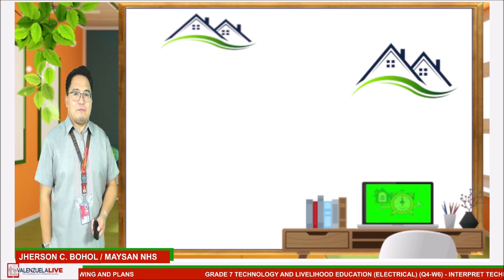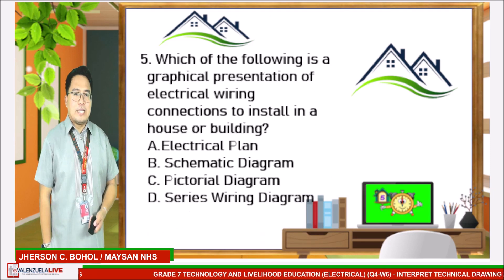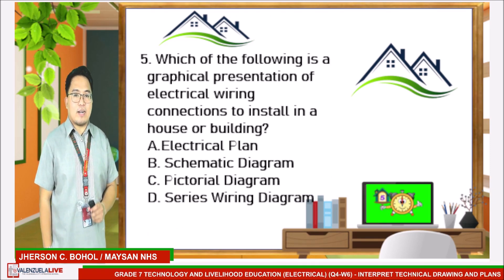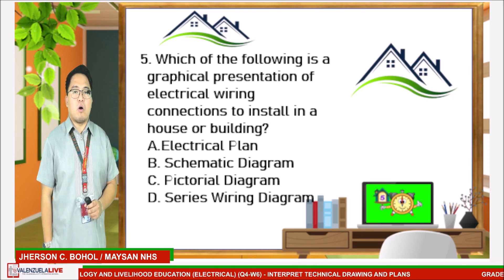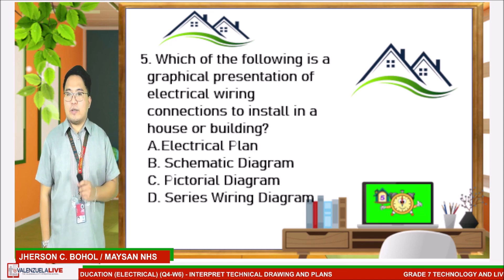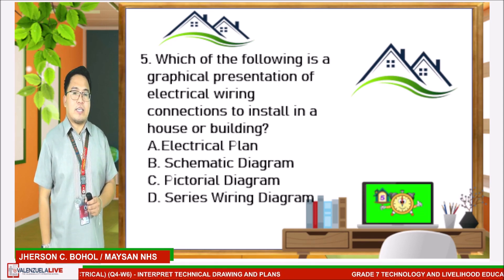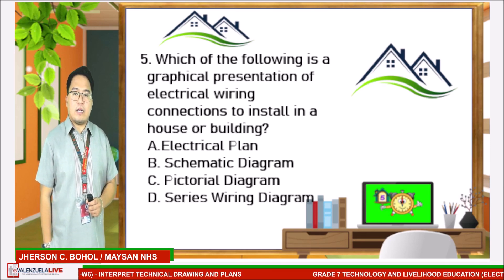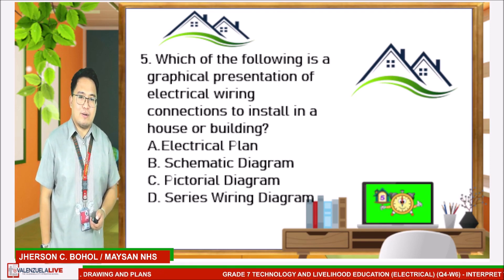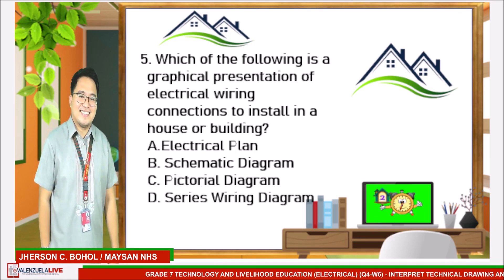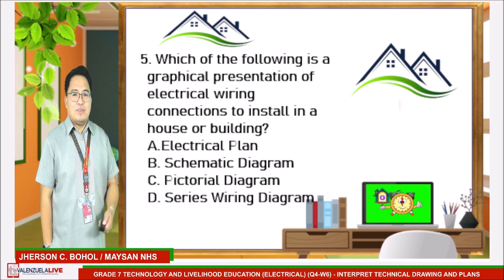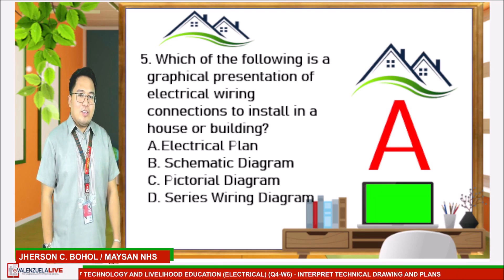Number five: which of the following is a graphical presentation of electrical wiring connections to install in a house or building? Choices are: letter A, electrical plan; letter B, pictorial diagram; letter C, schematic diagram; and letter D, series wiring diagram. If you answered letter A, you are correct.